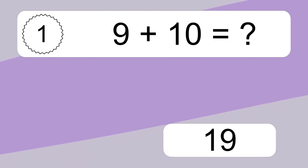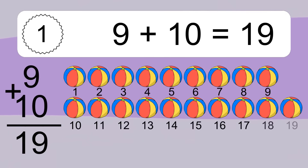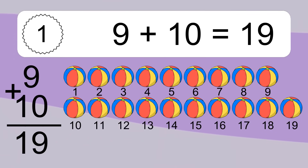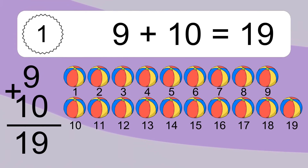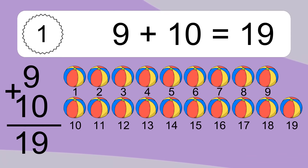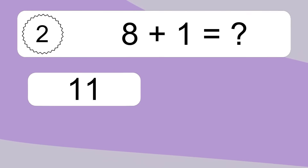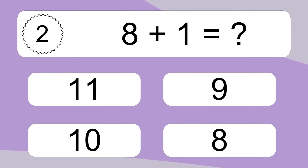9 plus 10 equals 19. Let's count it: 1, 2, 3, 4, 5, 6, 7, 8, 9, 10, 11, 12, 13, 14, 15, 16, 17, 18, 19. 8 plus 1 equals what?